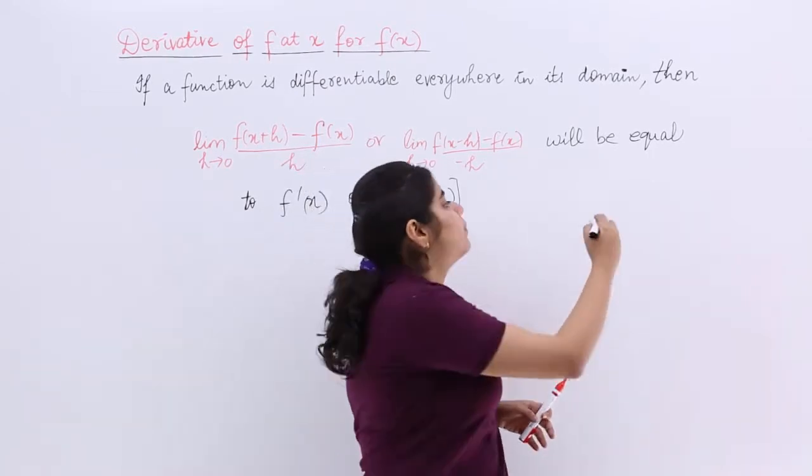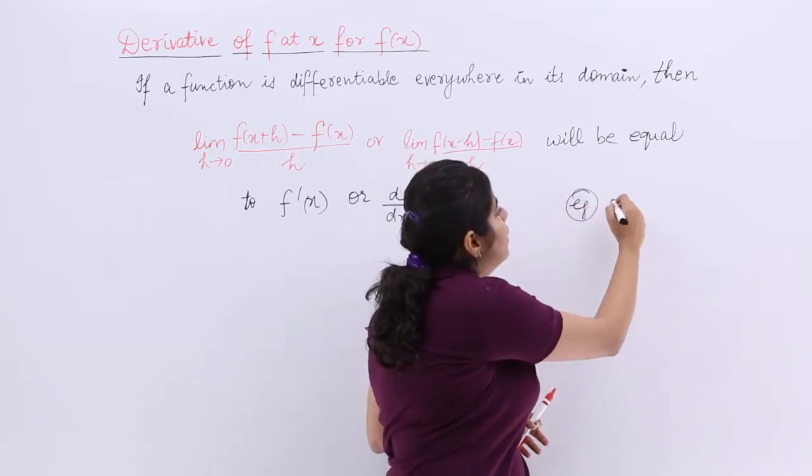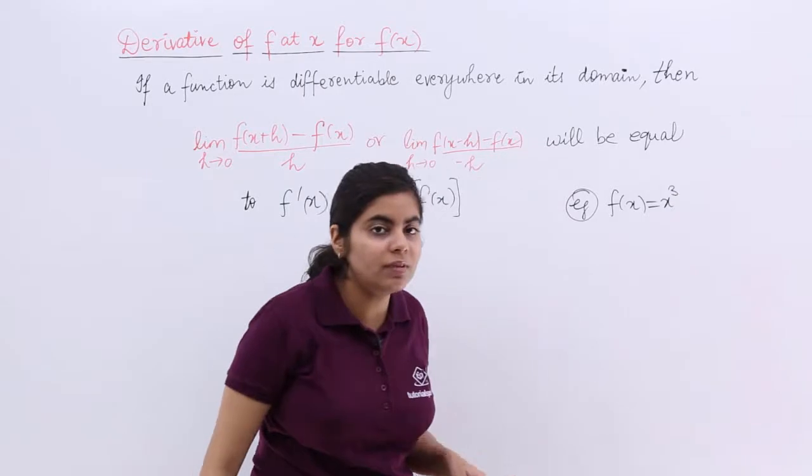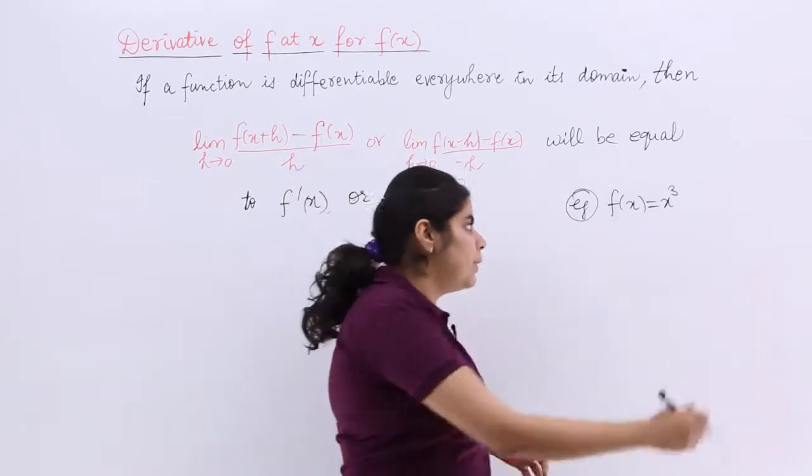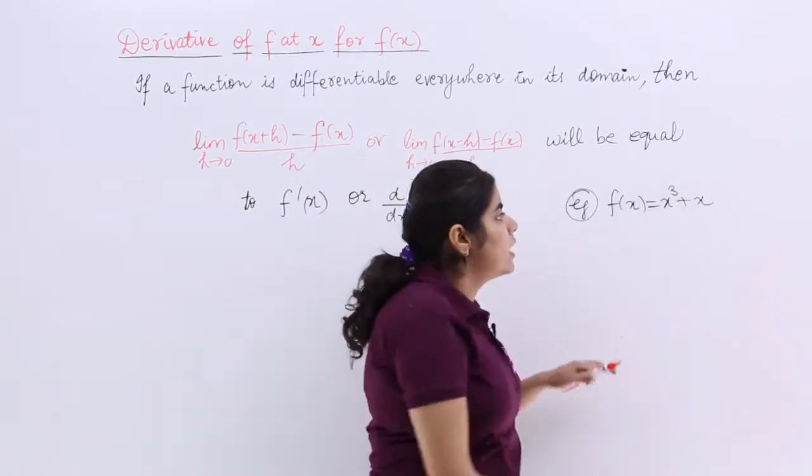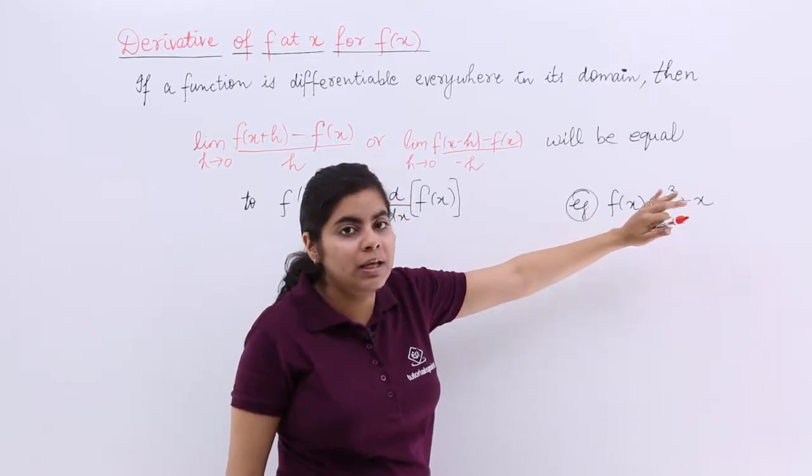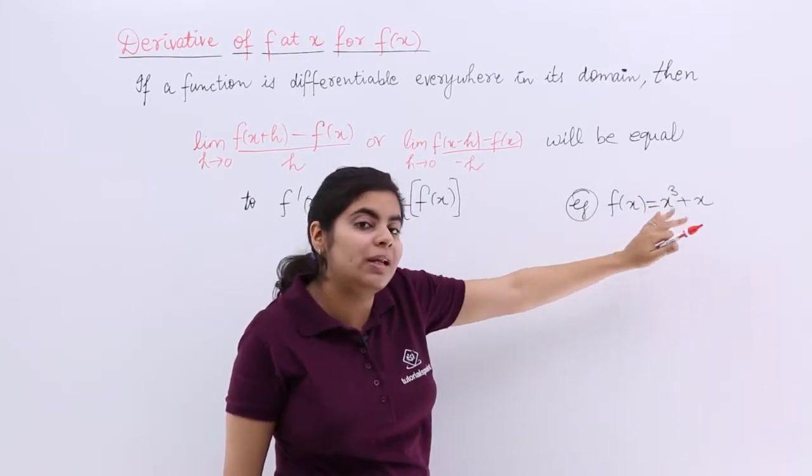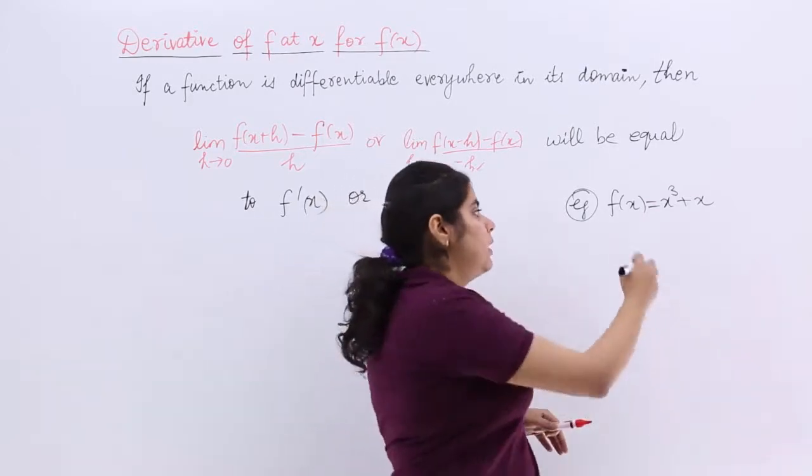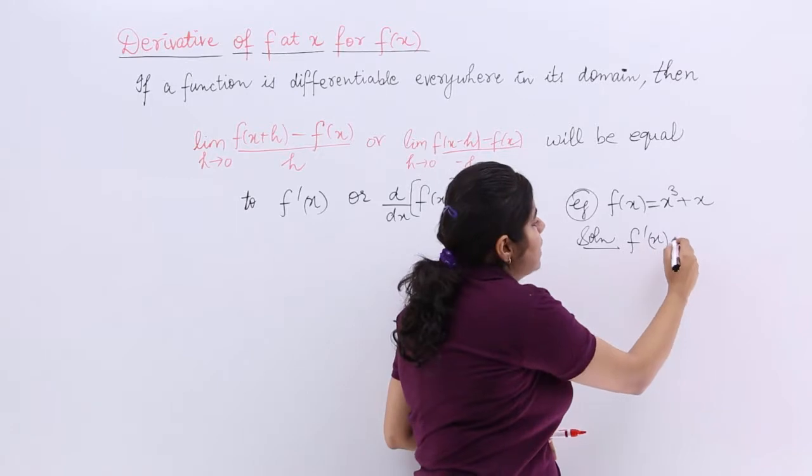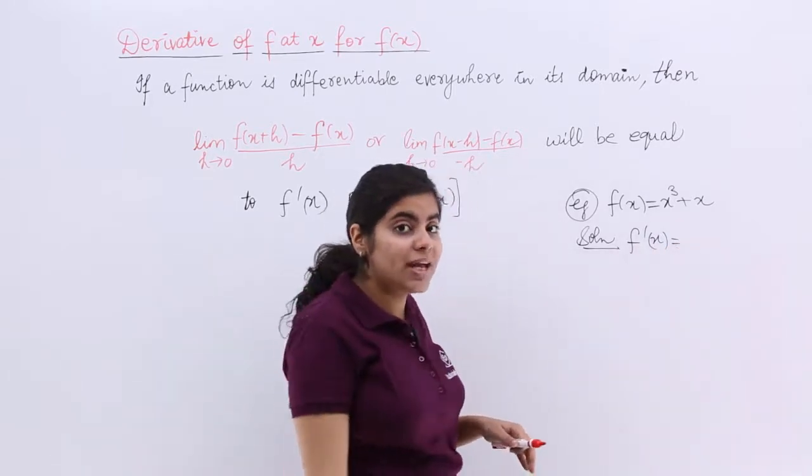I mean to say that suppose you have been given an example wherein your f(x) is equal to x cube plus x. Now this is kind of a polynomial expression, wherein now I need to find out f dash x.